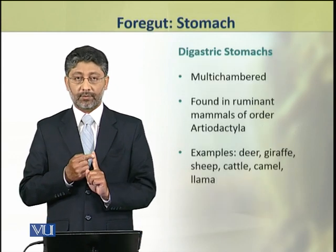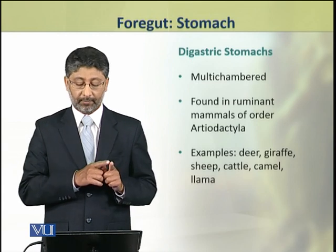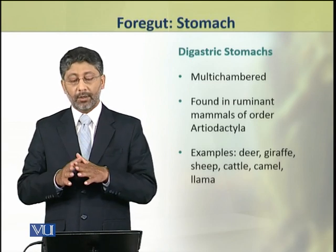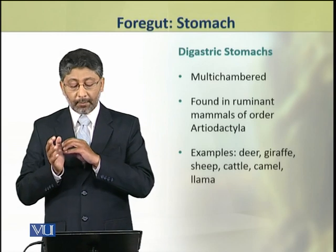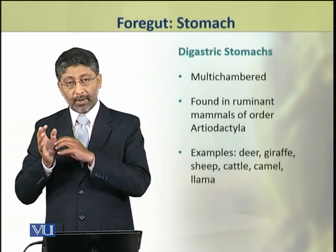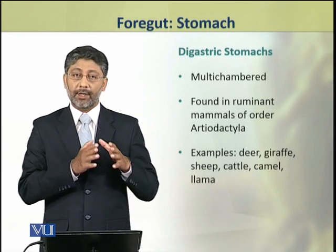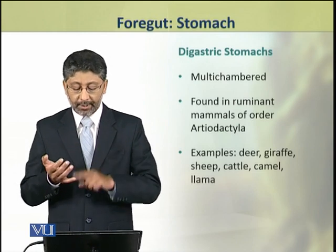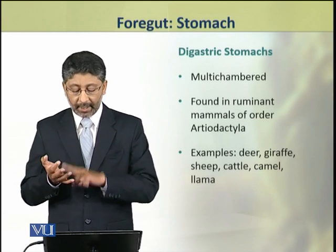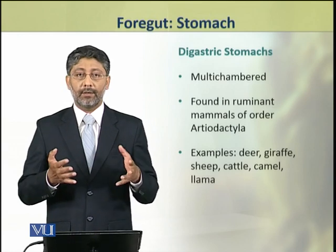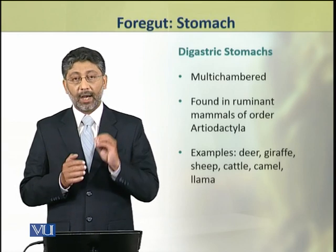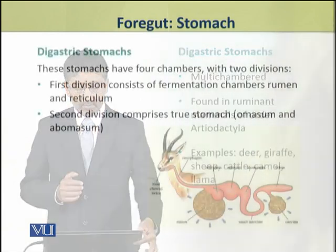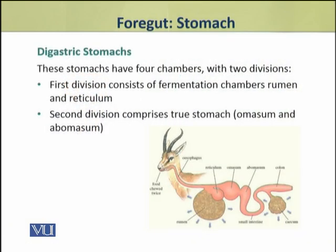Digastric stomachs are multi-chambered. They are found in ruminant mammals belonging to the order Artiodactyla. For example, deer, giraffe, sheep, cattle, camel, and llama have digastric multi-chambered stomachs.